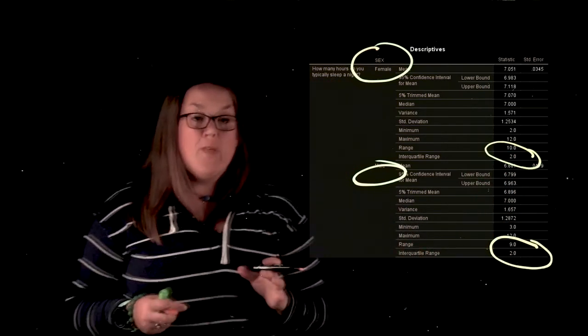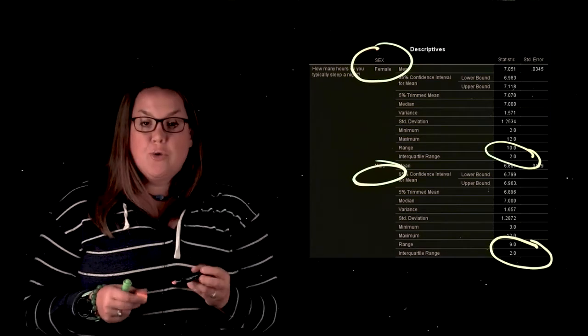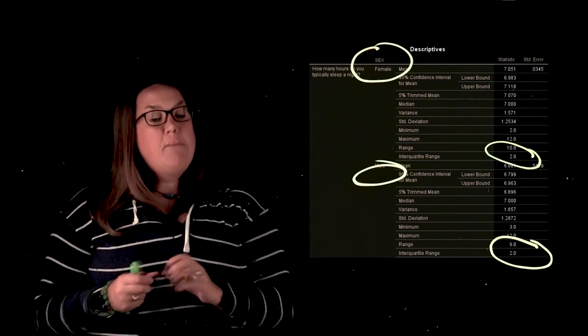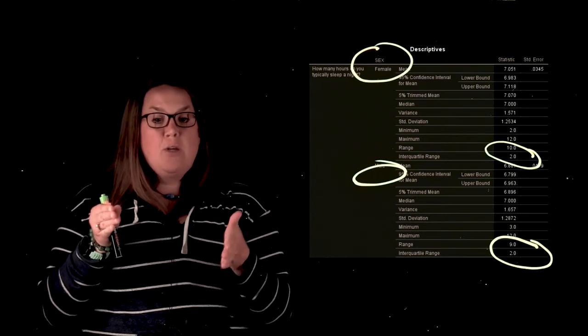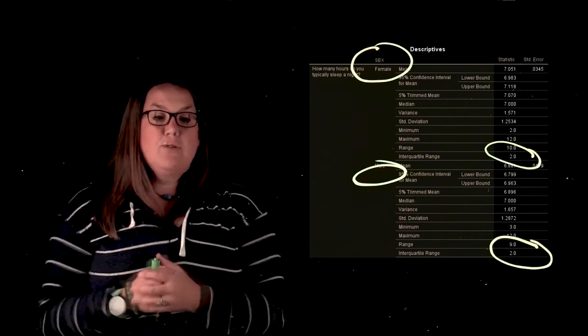So remember that if you have outliers, interquartile range can be a good choice for measuring variability because it is the middle 50%, the distance between Q3 and Q1, which excludes outliers.